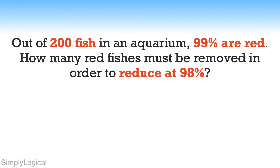Out of 200 fish in an aquarium, 99% are red. How many red fish must be removed in order to reduce it to 98%? This is an amazing math puzzle. Though it looks simple, it is trickier than we think. Feel free to pause the video and give it a try before checking the solution. Let everyone know your answer in the comment section.